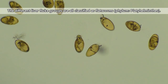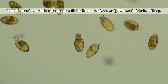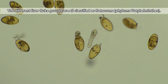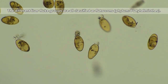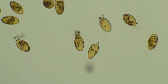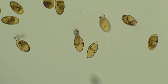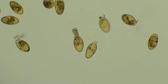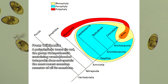Liver flukes are flatworms. There isn't a single taxonomic group classified as the liver flukes. Instead, they make up many groups that don't share a common ancestor. This means that liver flukes are a polyphyletic group of animals.